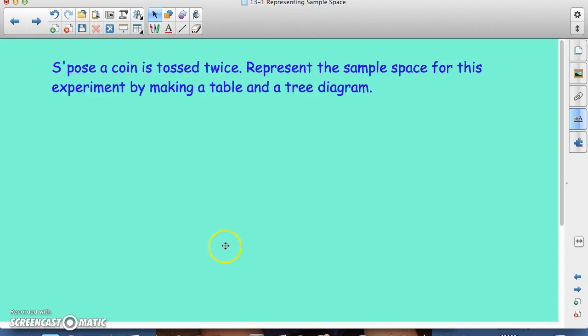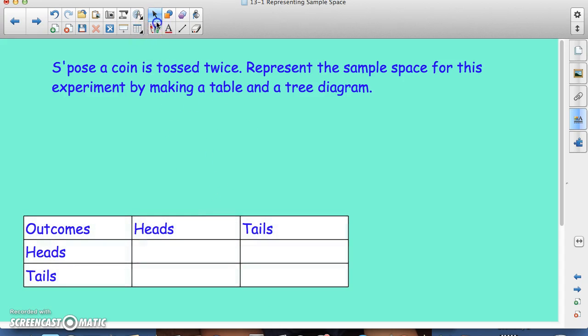So let's talk about the table first. When we organize our table, we have the different outcomes. We have heads and tails. This would be your first trial here, and this would be your second. So this would be flipping the coin the first time, and this is flipping the coin the second time.